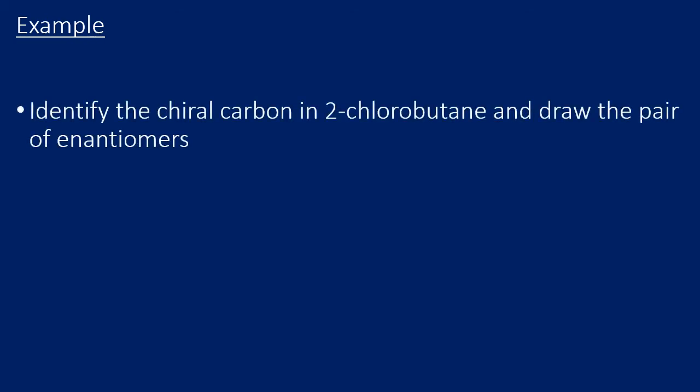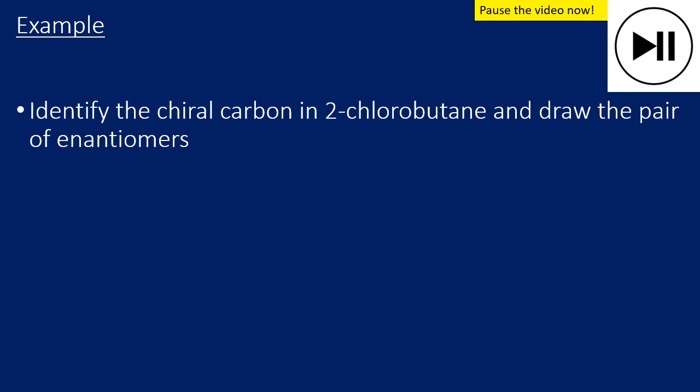Let's have a look at an example. So identify the chiral carbon in 2-chlorobutane and draw the pair of enantiomers. I'm suggesting you pause the video and have a go doing this on your own. And when you're ready to go through it, unpause the video.